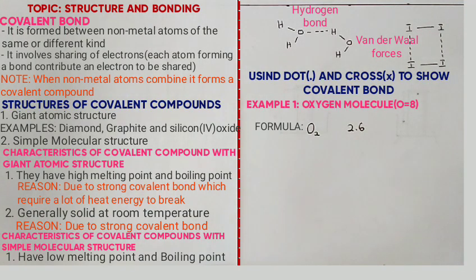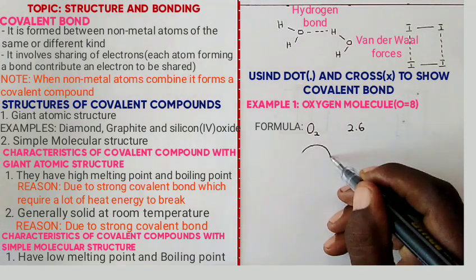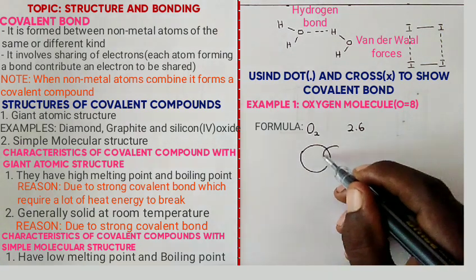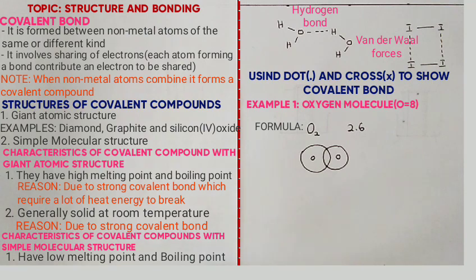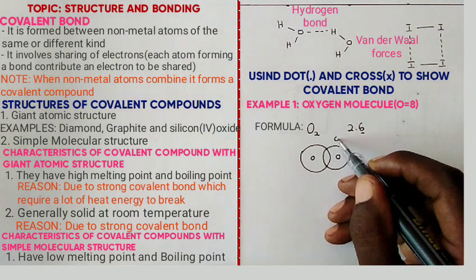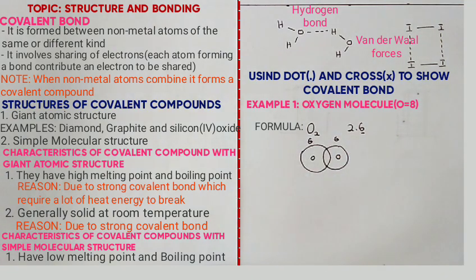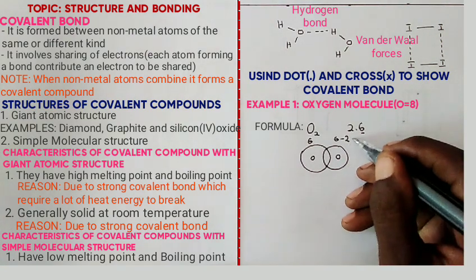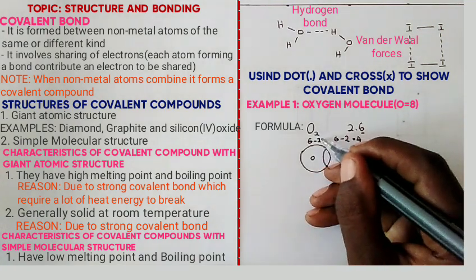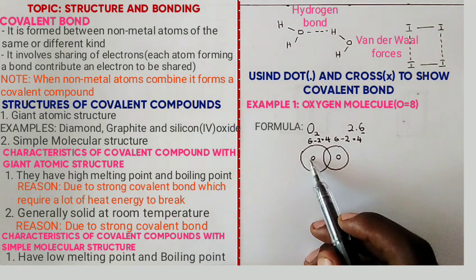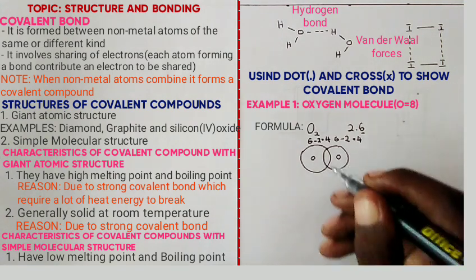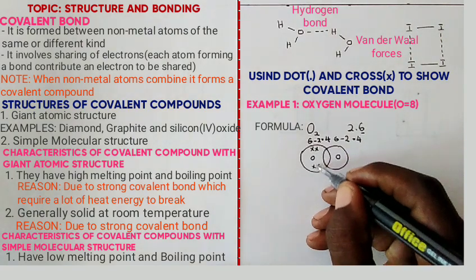Then draw two circles, one for each oxygen atom. Take the six electrons and place them — six for one atom and six for the other. For an atom to attain stability, oxygen needs to gain two electrons, so subtract two from each, leaving four electrons remaining on each side. Place the four remaining electrons outside: four crosses for one oxygen atom and four dots for the other.